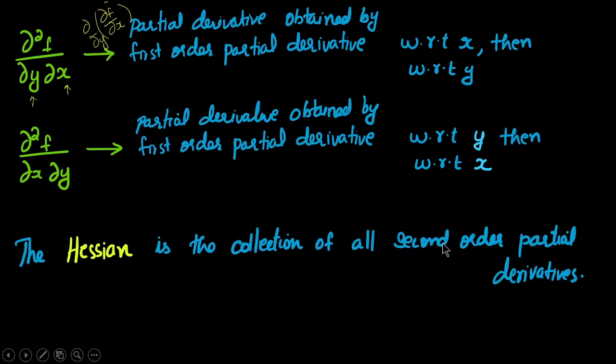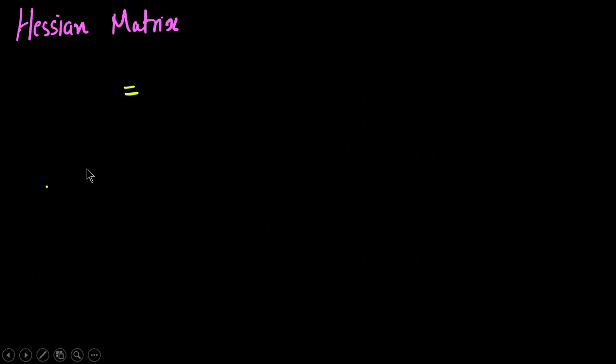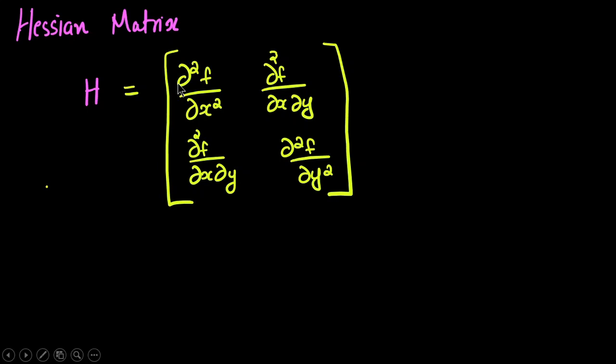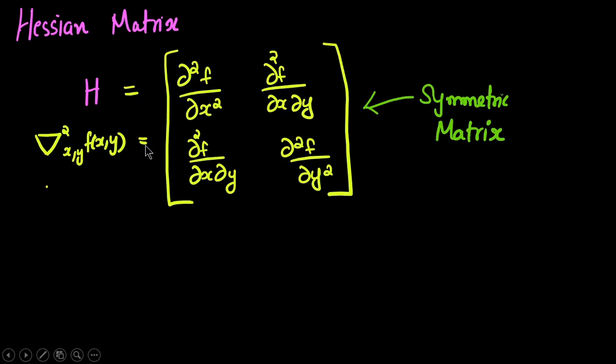The Hessian is the collection of all second order partial derivatives — that is the Hessian matrix. More or less, the mixed partial derivatives are the same regardless of the order of derivation. The Hessian matrix is represented as H (capital H, just as the Jacobian was capital J). It collects all second order derivatives: ∂²f/∂x², ∂²f/∂y², and ∂²f/∂x∂y. It is a symmetric matrix.